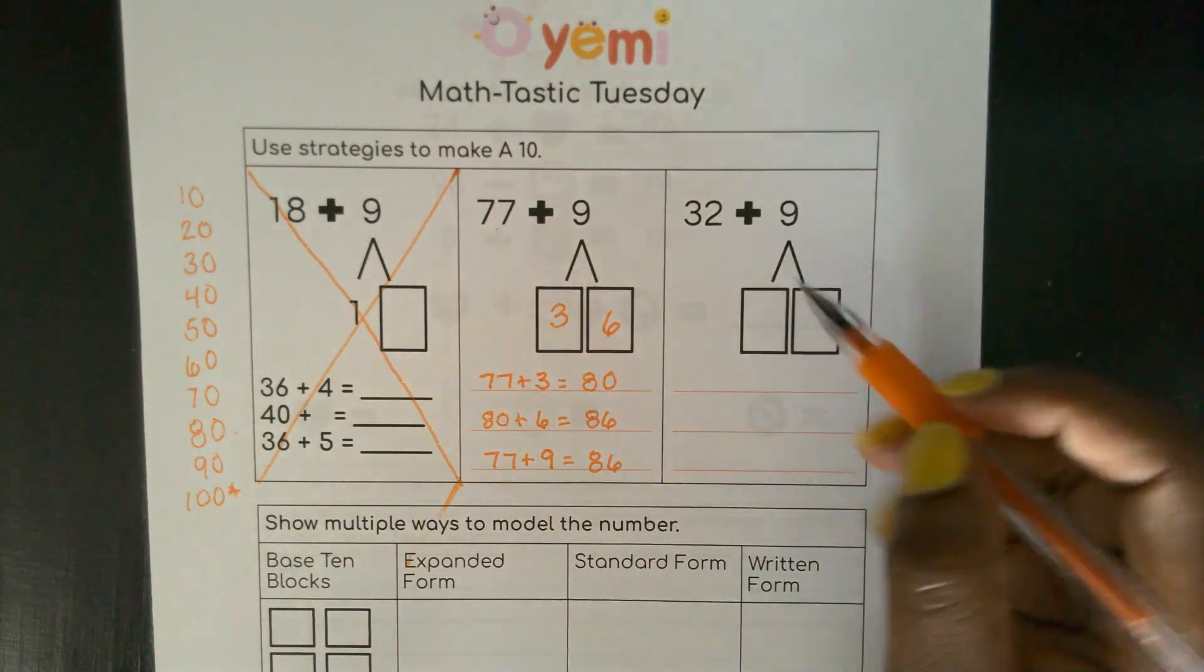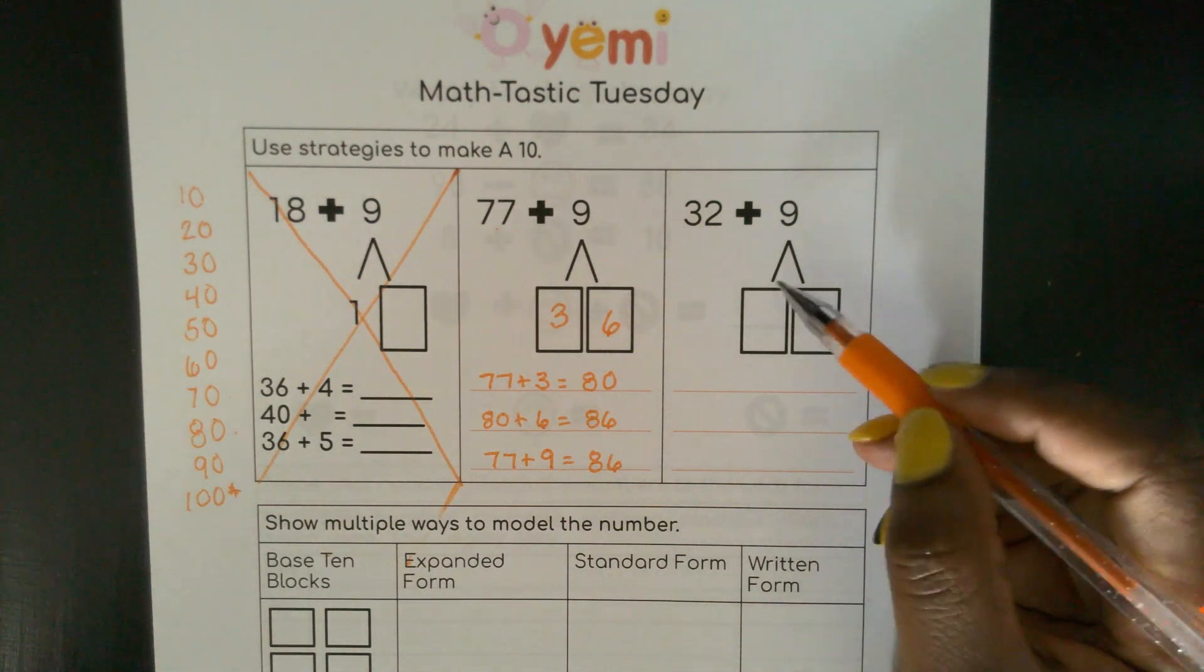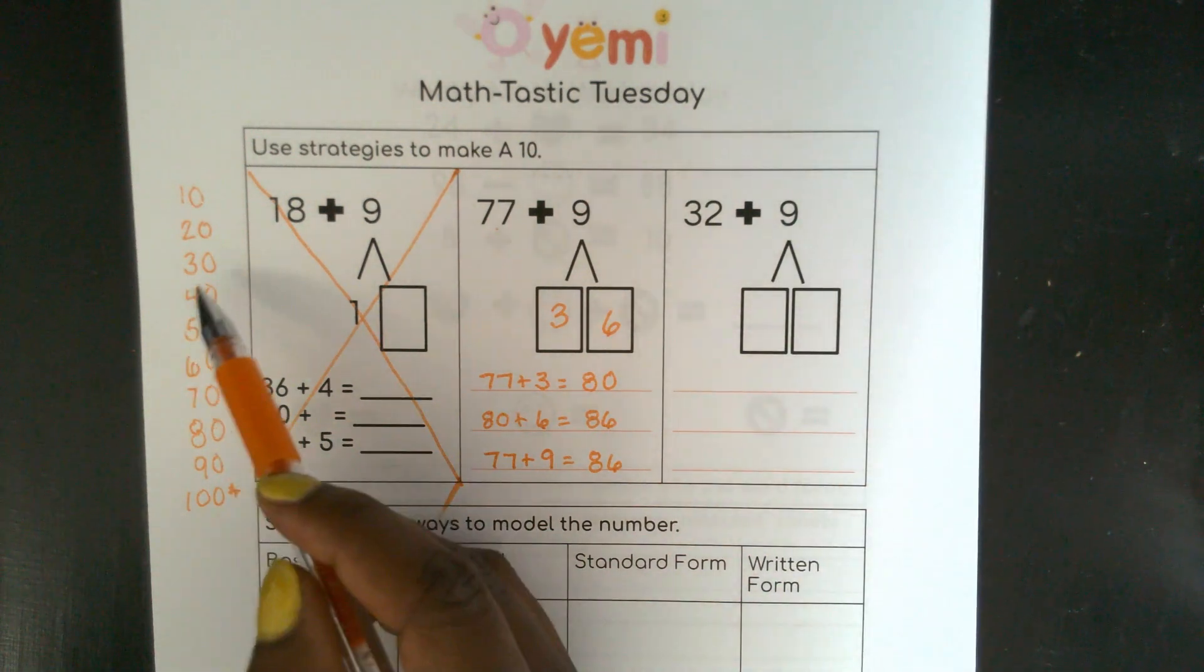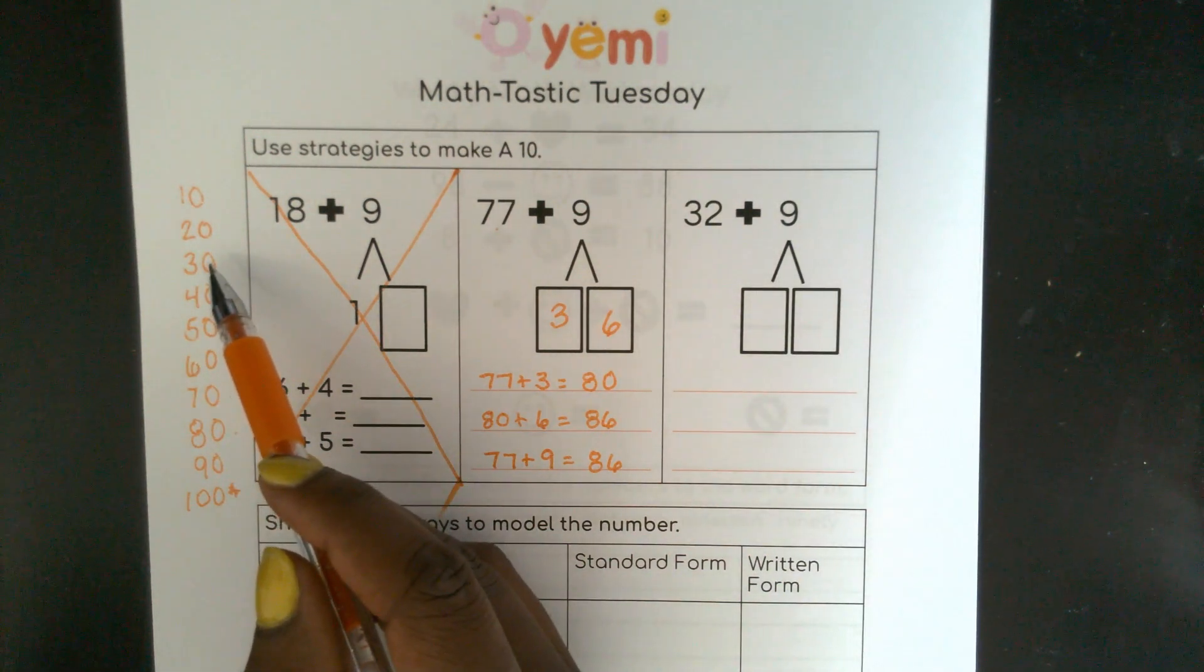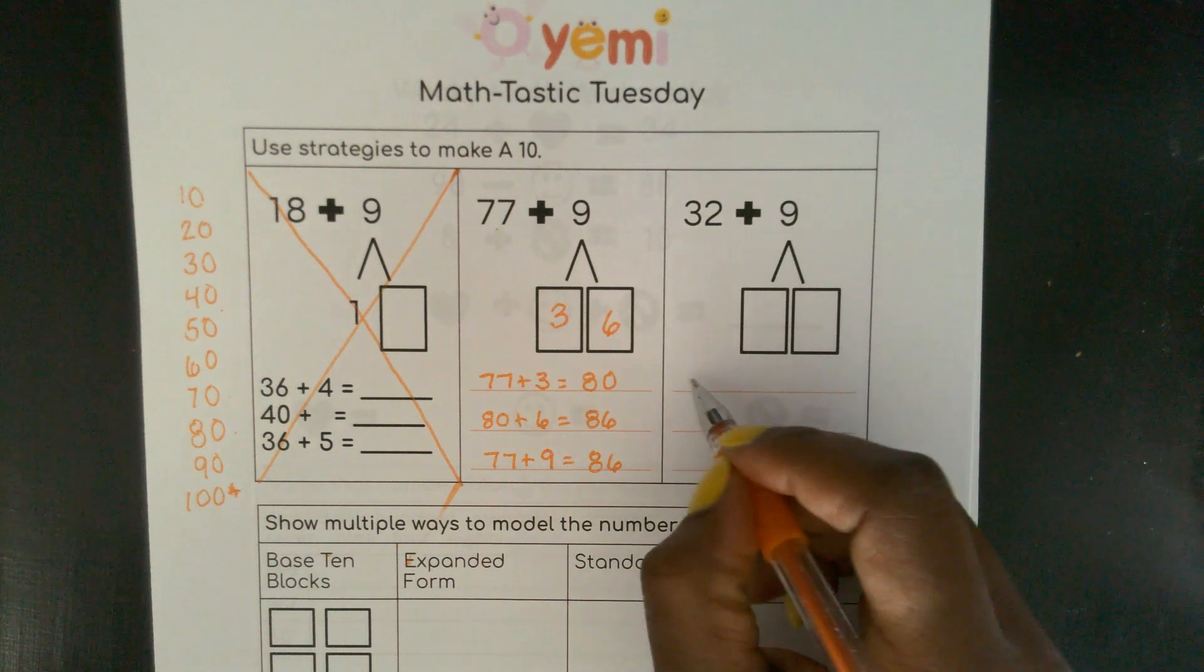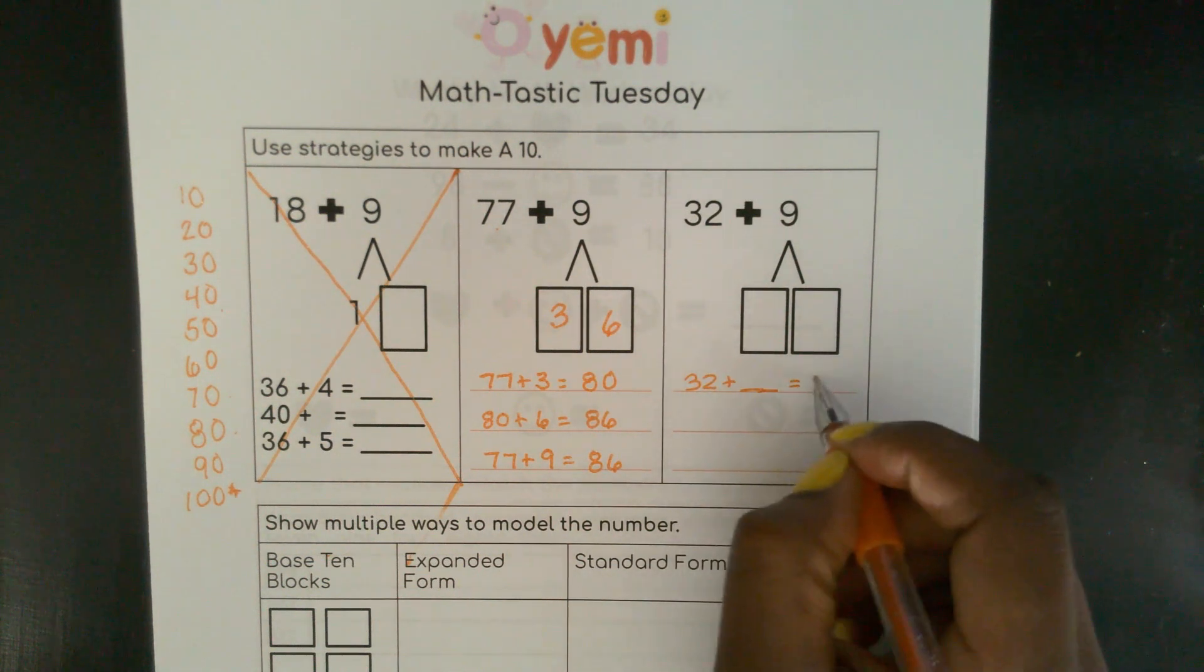Let's try this next one. How much more do I need to make the next 10 after 32? So 32 is here. My next 10 is, yes, 40.